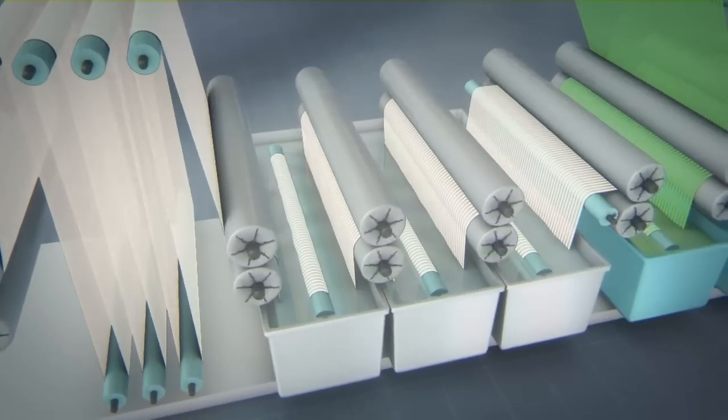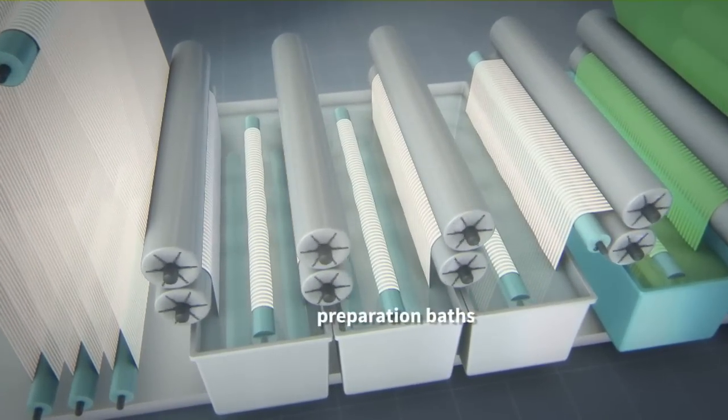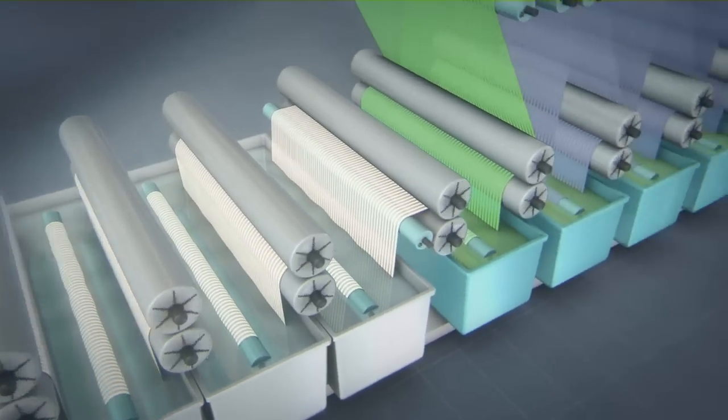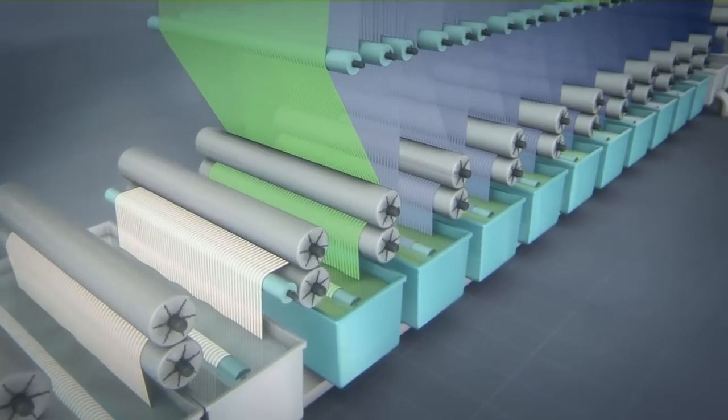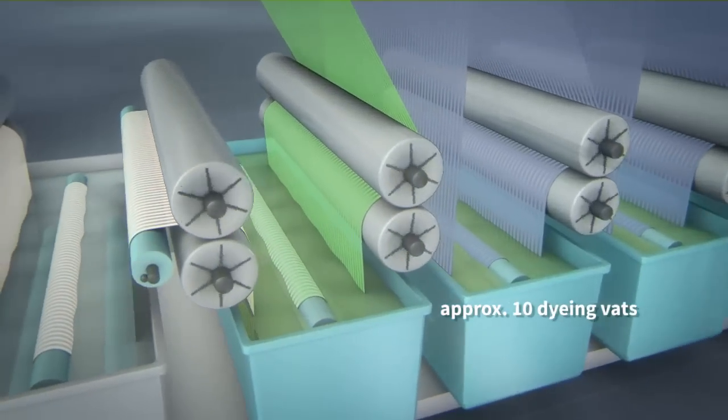After spinning, up to 4,500 cotton threads are simultaneously pre-wetted, degreased with chemicals, and cleaned in several preparation baths. Now the actual dyeing process begins with an average of ten dyeing vats.